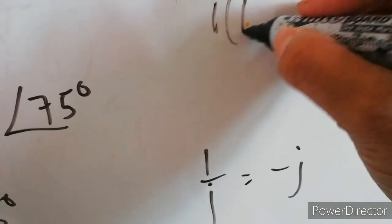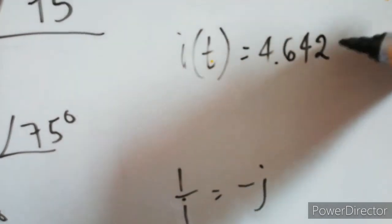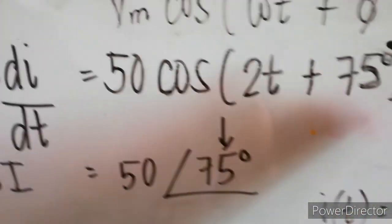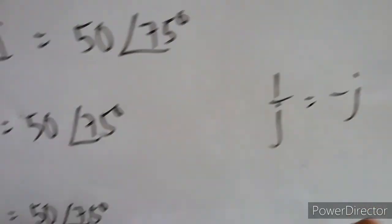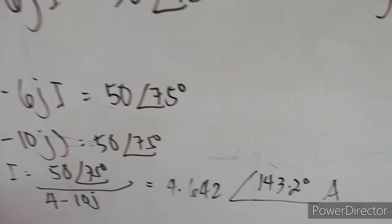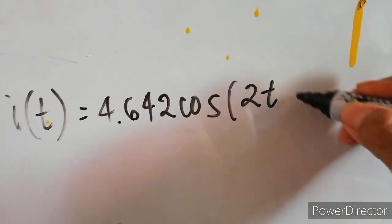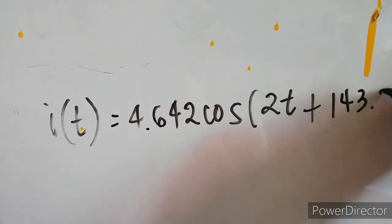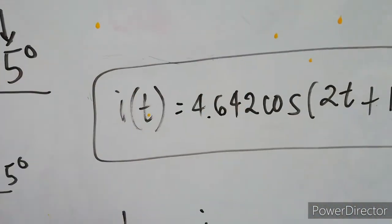So, in time domain form, we have i(t) = 4.642cos(2t + 143.2°). That is the answer.